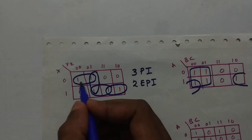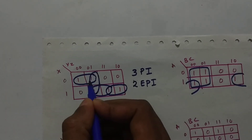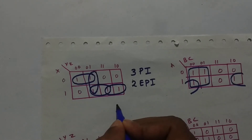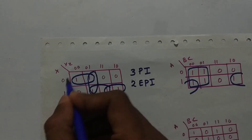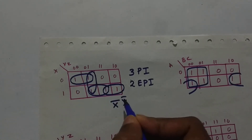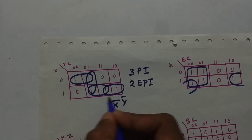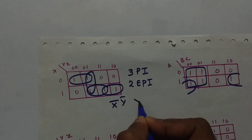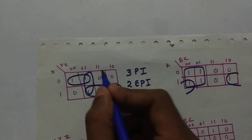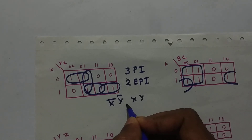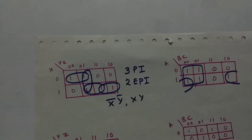The value of one essential prime implicant will be x-bar and y-bar, and another essential prime implicant is x and y. So these are the two essential prime implicants which you can get from this K-map.